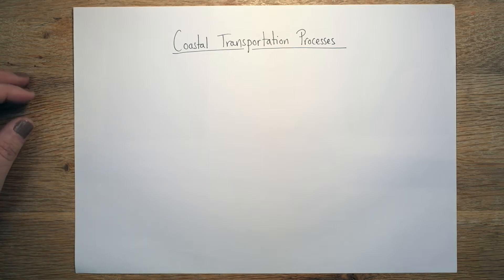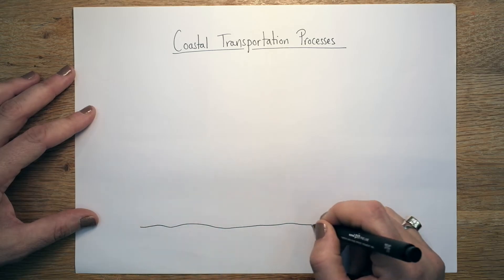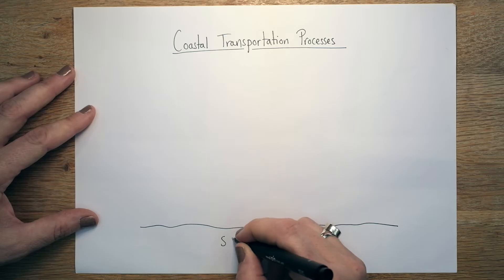So if you start by just popping the title and then drawing the seabed, it's just kind of a loosely wavy line like this. We'll call that a seabed.